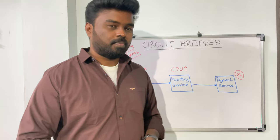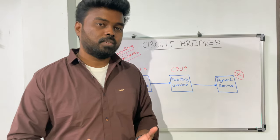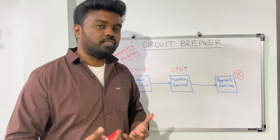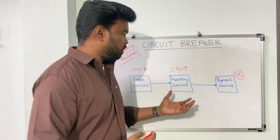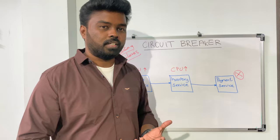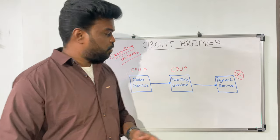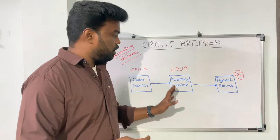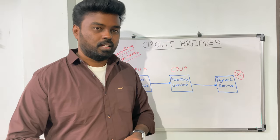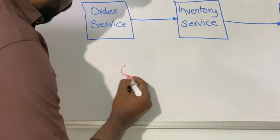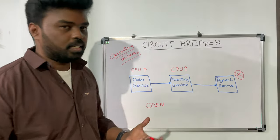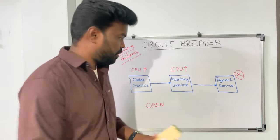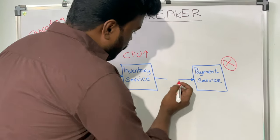We have a failure in the payment service — it is not able to respond to requests as fast as it usually does. The inventory service starts to receive failure responses from the payment service, such as timeouts or internal server errors. At some point, the inventory service will identify that something is wrong with the payment service and stop sending traffic to it. This is what we call the open state — the circuit is open and no requests will pass to the payment service.